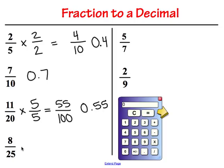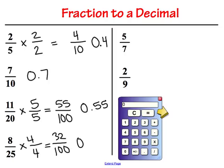Lastly, we have 8 twenty-fifths. We're going to multiply that denominator by 4, because 4 twenty-fives is 100. 8 times 4 is 32, and 25 times 4 is 100. As we say this fraction, we are also saying it as a decimal — thirty-two hundredths looks like 0.32 in the hundredths place.